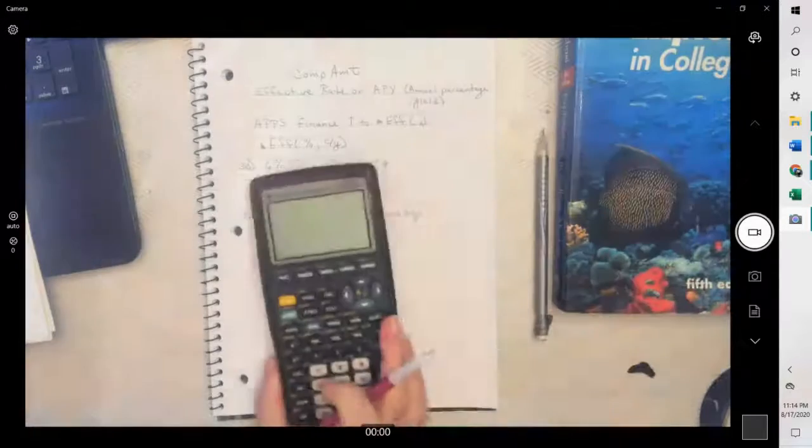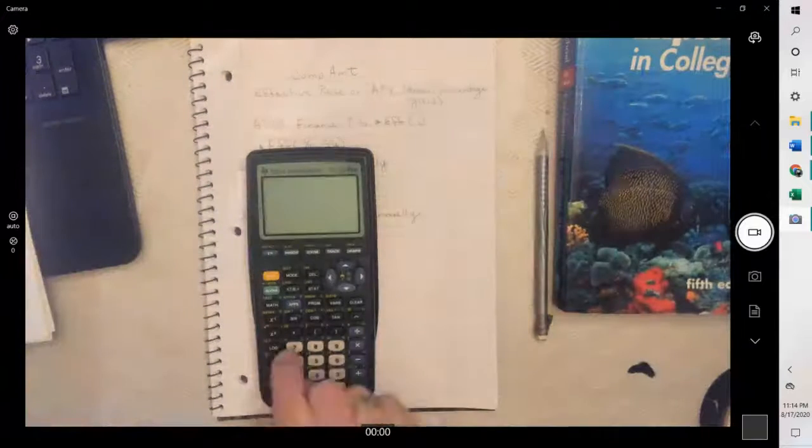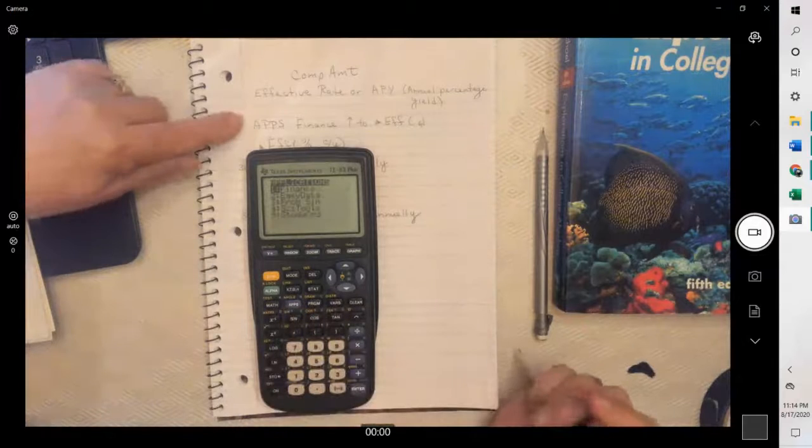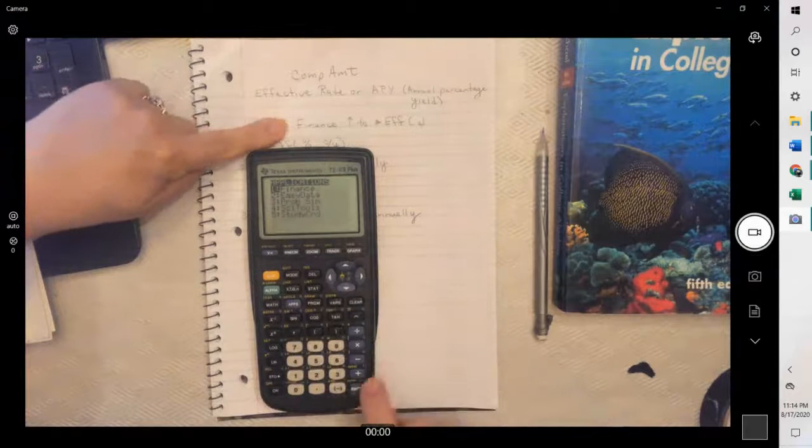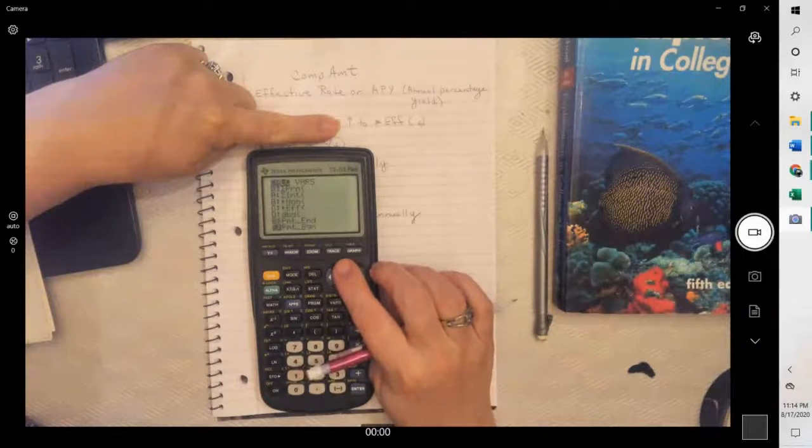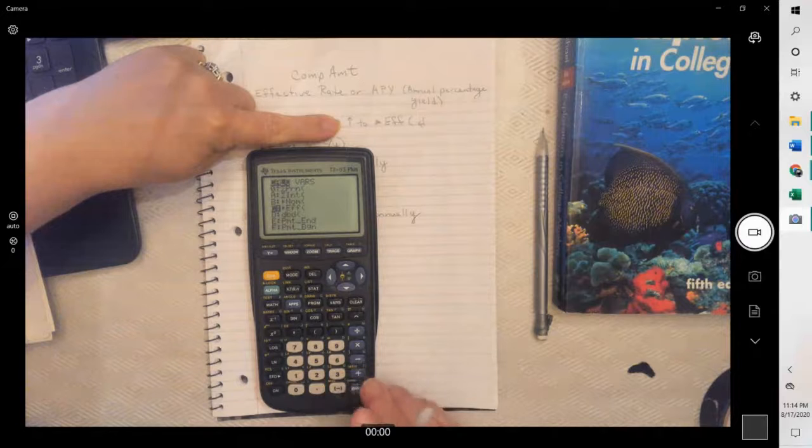Now to use it, you do apps. Finance is highlighted. And then you have to go up until you see effective rate, EFF. Highlight it and hit enter.